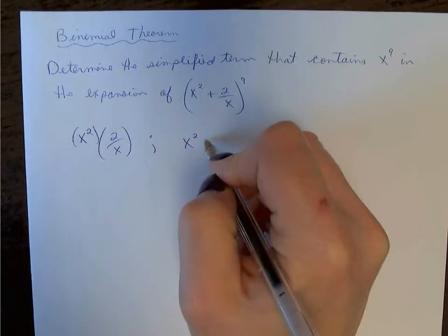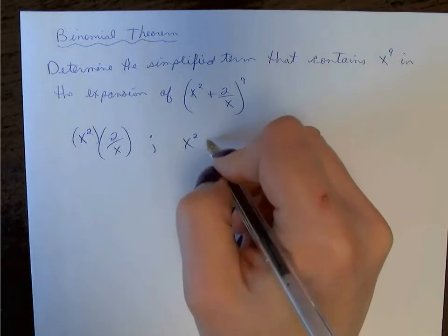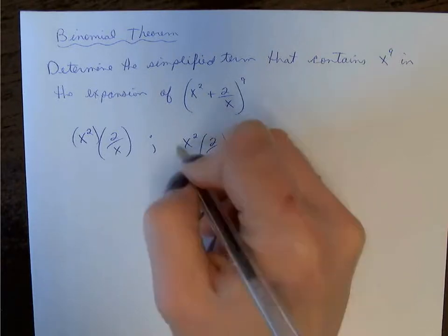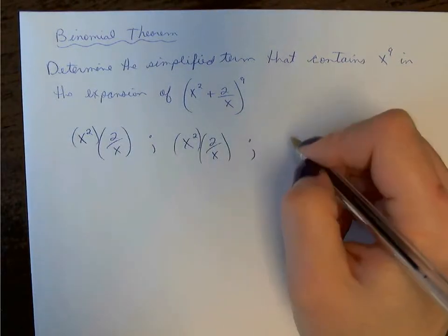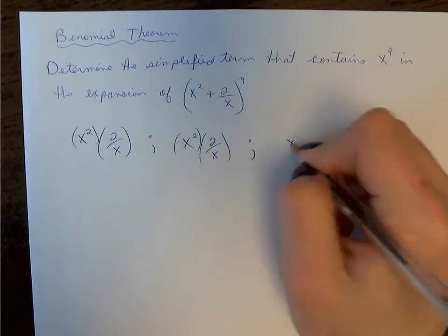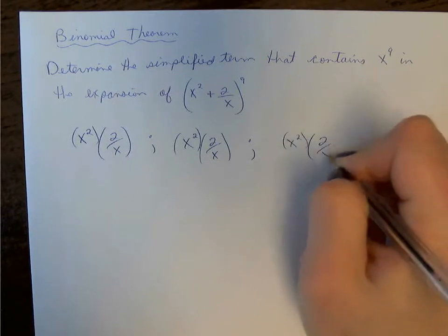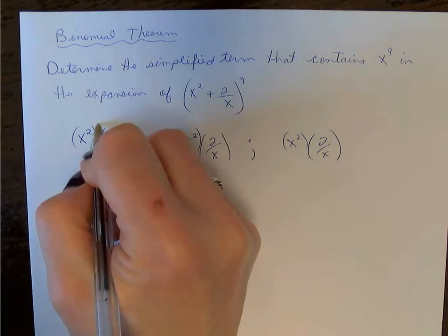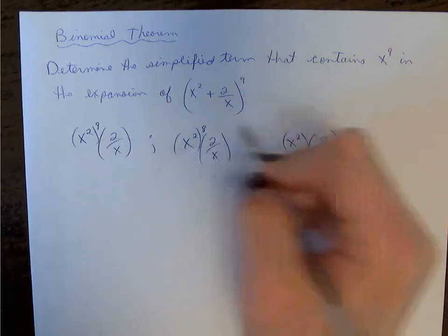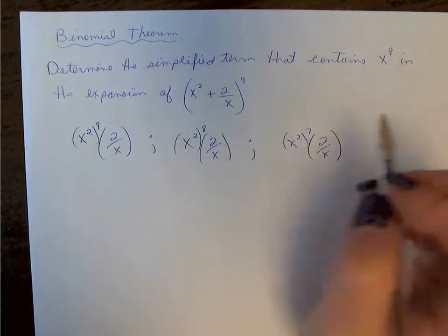I want to do this at least for the first three terms that I would be finding, because then you can find a pattern. We'll put in the exponents. So we would count from 9, 8, 7, and we would continue if we needed.